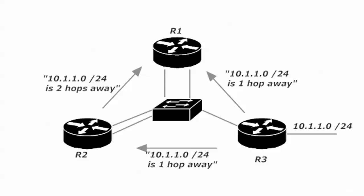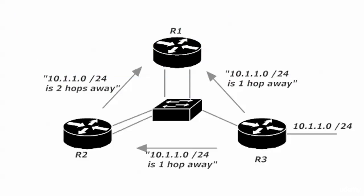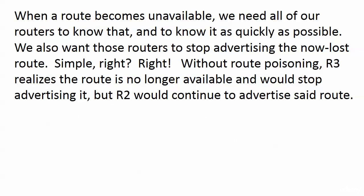Everything would be fine here, until that route goes away. When a route becomes unavailable — let's take another look at 10.1.1.0/24 — let's say that network goes down.